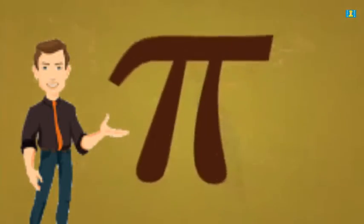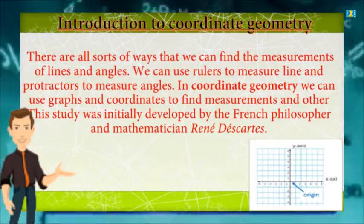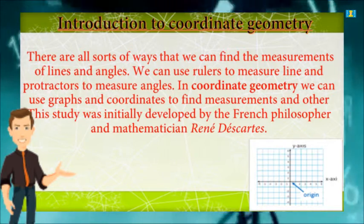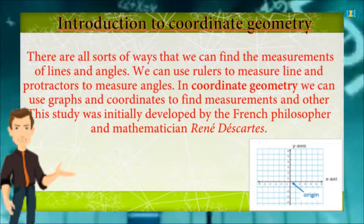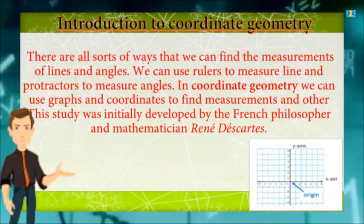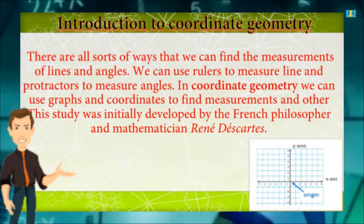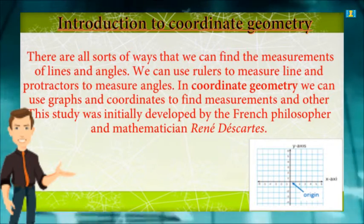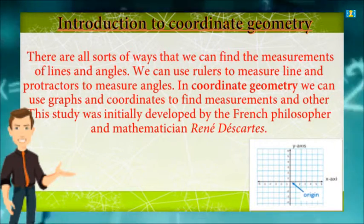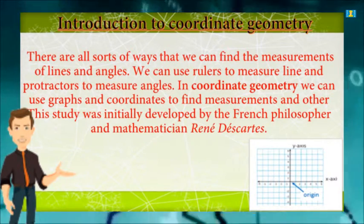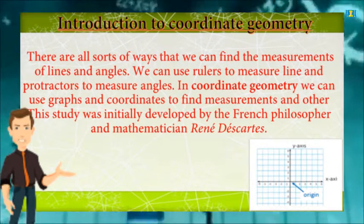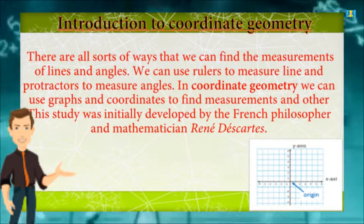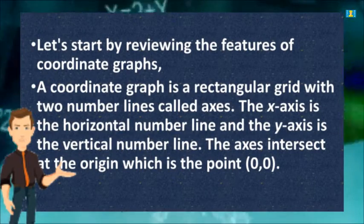Hi students, now we are going to discuss a new chapter: coordinate geometry. There are all sorts of ways that we can find the measurements of lines and angles. We can use rulers to measure lines and protractors to measure angles. In coordinate geometry, we can use graphs and coordinates to find measurements. This study was initially developed by the French philosopher and mathematician René Descartes.